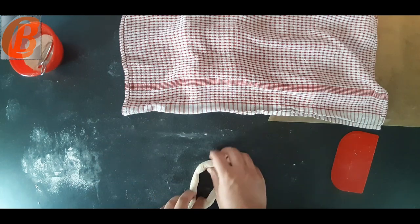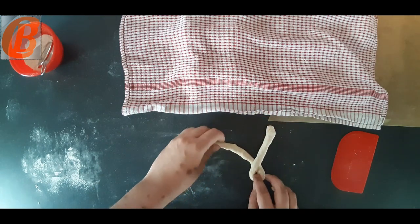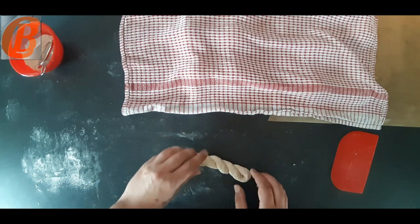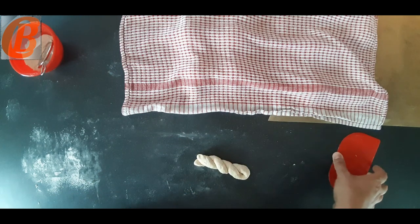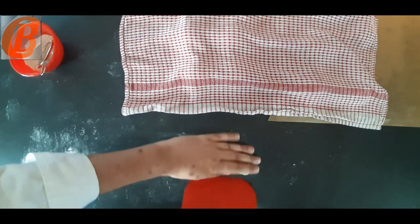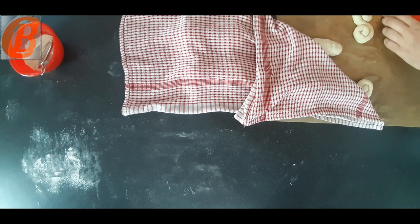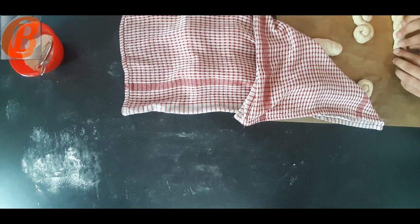Shape number six, you're going to just find the halfway mark, fold it in half, and then fold over to create this twisted pattern.